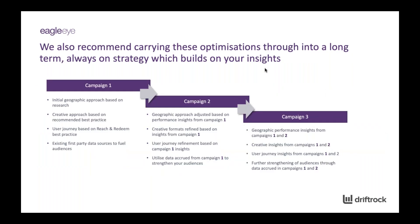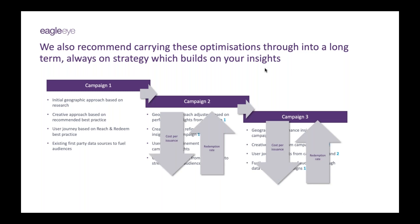We also recommend carrying these optimisations through into a long term always-on strategy. In your first campaign you're really trying to test and learn — you've got initial assumptions about what offer, creative and geographic approach may work, as well as some first party data you may want to utilise. But if you carry on the insights from each campaign, performance improves over time. By the second and third campaign you've learned which regions of the UK work best, what creative and ad formats work best. Progressively your cost per issuance starts to come down, your redemption rate continues to get better, and you master the approach. We always encourage clients to consider this as a long term strategy, not just a one-off burst, because voucher issuances and campaigns can be great for driving footfall over the long term.